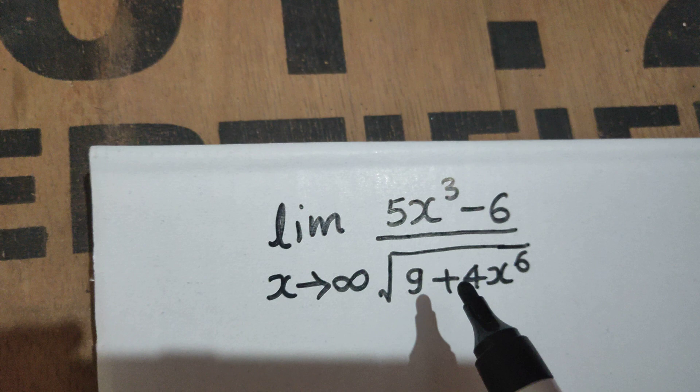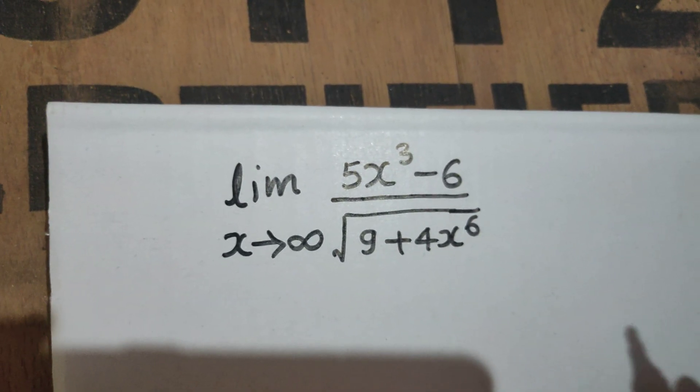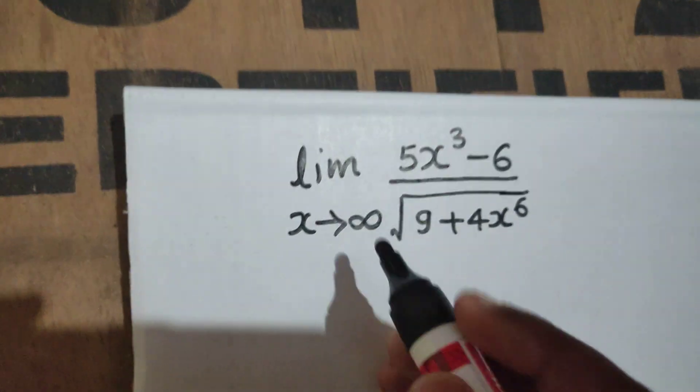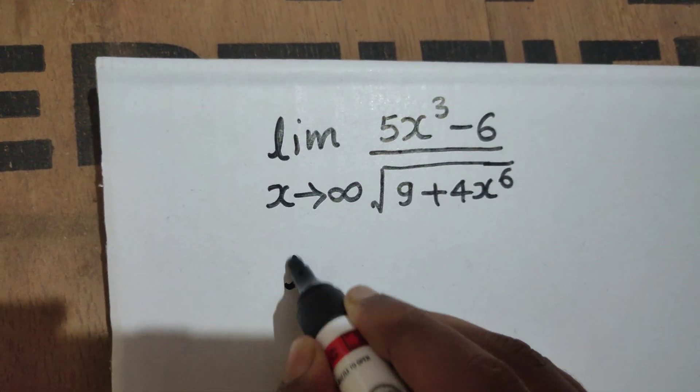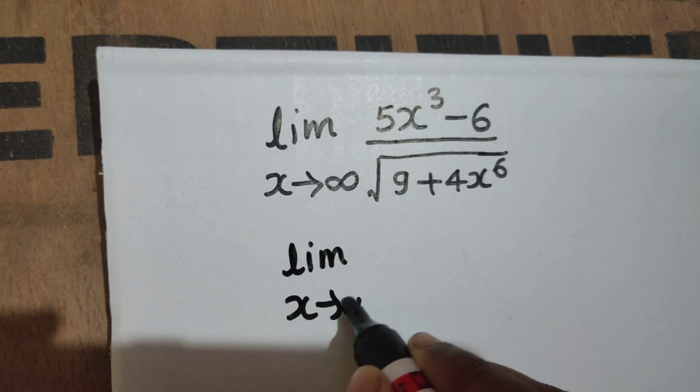So my first thinking is why not take this x⁶ common from the denominator. So 5x³ - 6 divided by, when you take this common, the scenario will be like this: